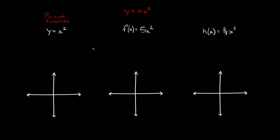The most basic type of parabola you're going to see is in this form right here: y is equal to ax squared. The most basic function is the parent function, which is y is equal to x squared, and this function just looks something like that.